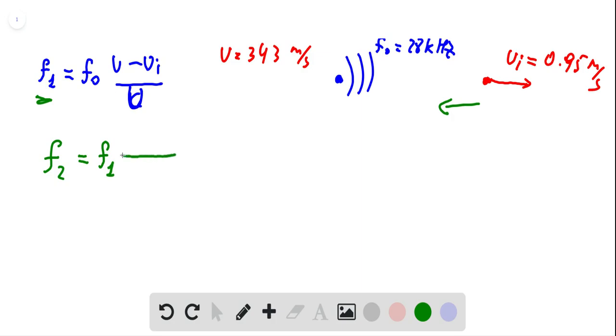And now the detector is at rest but the source is moving in the opposite direction. So frequency should decrease. Again this means that we have plus here.